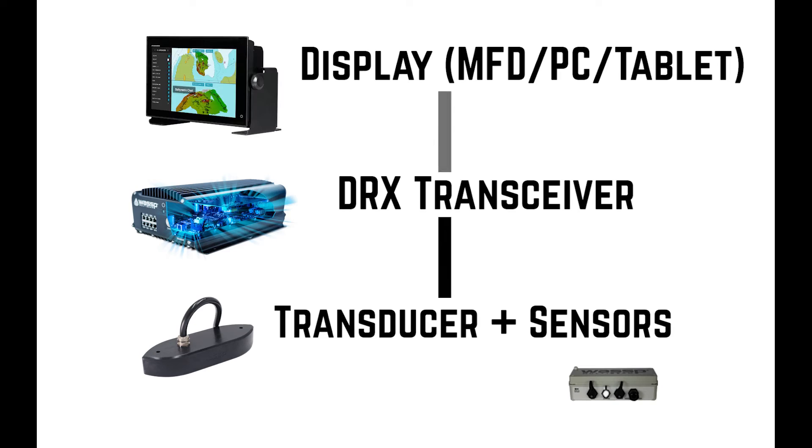The DRX, which is the transceiver, receives the data from all of our sensors, which includes the transducer, motion sensor, position sensor, processes that through data fusion, then does the management of the data so that it can be passed up to the PC, which does the visualisation.